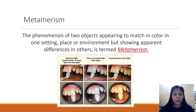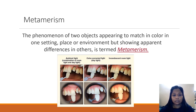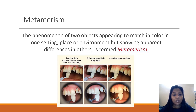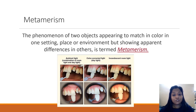The next phenomenon is metamerism — the phenomenon of two objects appearing to match in color in one setting or environment but showing apparent differences in another. In one particular setting the teeth appear one color, and in another setting a different color. For example, what looks like an A1 shade in natural daylight may look like an A2 shade in a color-corrected incandescent room light.